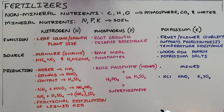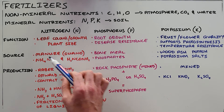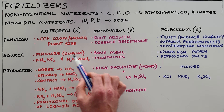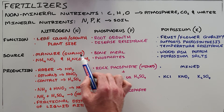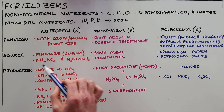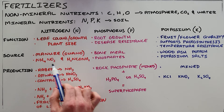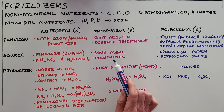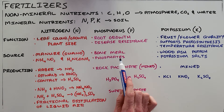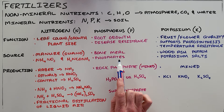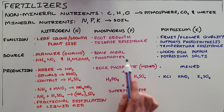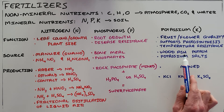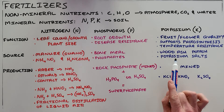We need to know the source of each of these minerals. Nitrogen comes from manure or guano — which is essentially bird droppings — most often in the form of ammonium nitrate or urea. Phosphorus is most commonly found in bone meal or phosphates, and potassium comes from wood ash, also known as potash, and potassium salts.